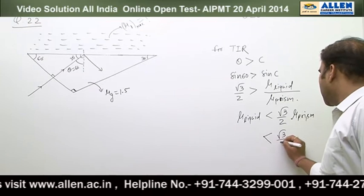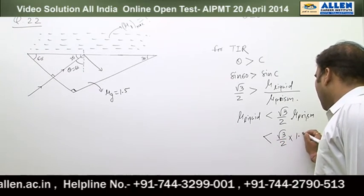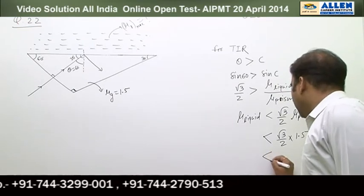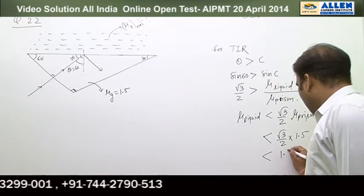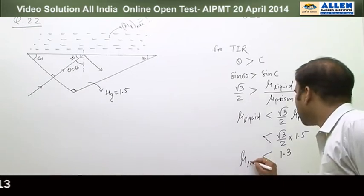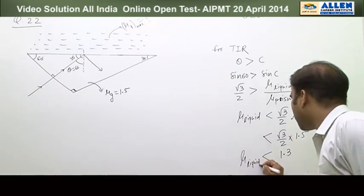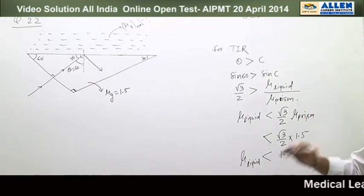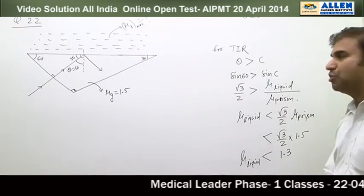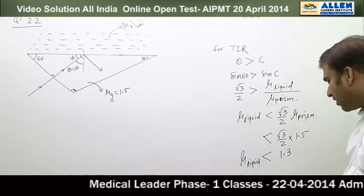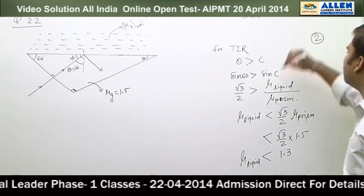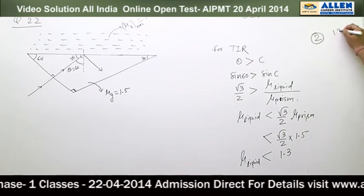As per the question, μ_prism is 1.5. So μ_liquid must be less than (√3/2) × μ_prism. When we calculate it, it becomes 1.3. So μ_liquid is less than 1.3, and the maximum possible value is 1.3. The correct option is option number 2, where the answer is 1.3.